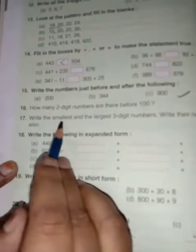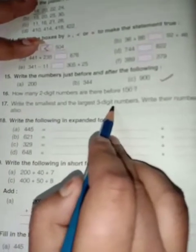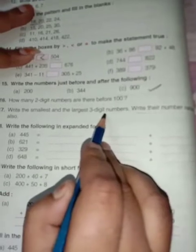17 is write the smallest and the largest three digit numbers. Write their number name also. So smallest three digit number is 100. And spelling is H-U-N-D-R-E-D. And the largest three digit number is 999. So their number name is 999.